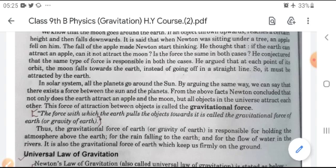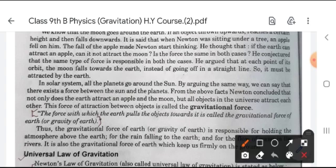This force of attraction between objects is called the gravitational force. The definition of gravitational force: the force with which the earth pulls the object towards it is called the gravitational force of earth, or gravity of earth.